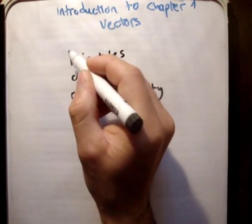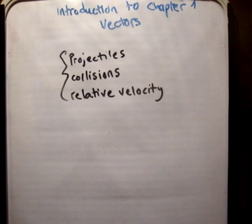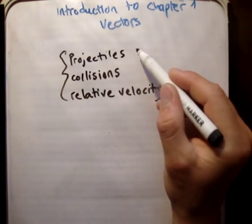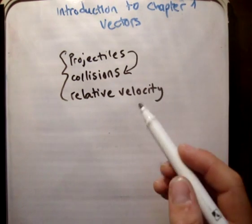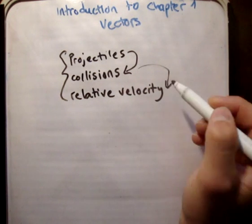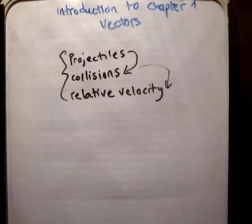And every single one of these things here, and more, are all analysed using vectors. So vectors is the only chapter essentially in the book that, or on the course or in Applied Maths, that if you don't have it done you can't really do anything else. So for example if you didn't do projectiles, that wouldn't stop you doing collisions, and if you didn't do collisions it wouldn't stop you doing relative velocity. However, if you didn't do vectors you wouldn't be able to do any of those.